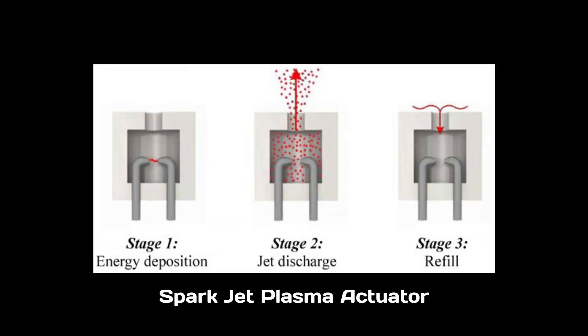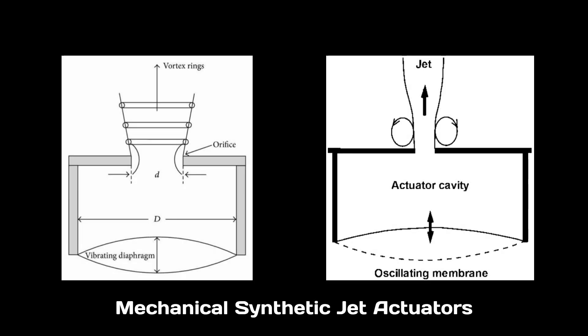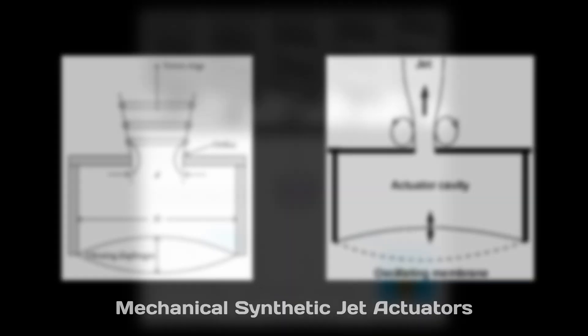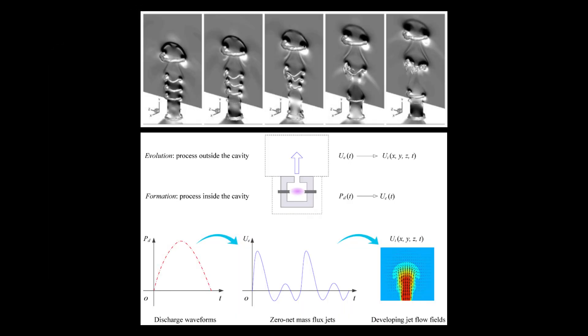A sparkjet actuator is a special type of zero-net mass flux actuator driven thermodynamically by pulsed arc spark discharge. Compared to widely investigated mechanical synthetic jet actuators driven by vibrating diaphragms or oscillating pistons, plasma spark jet actuators exhibit the unique capability of producing high-velocity pulsed jets at greater than 300 meters per second.